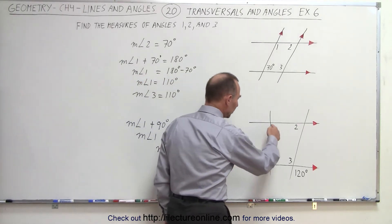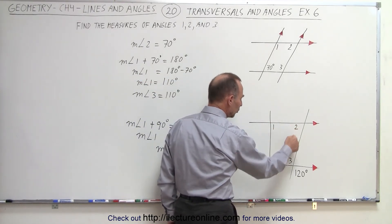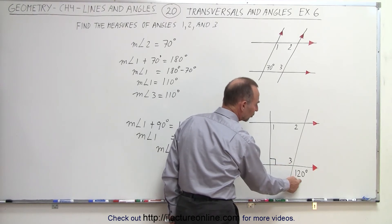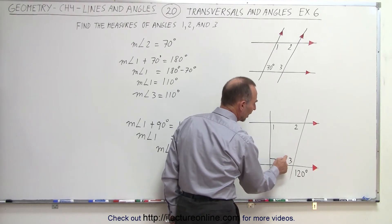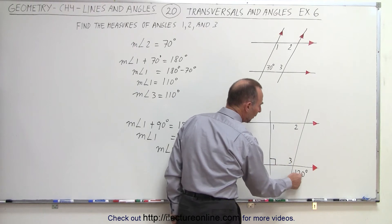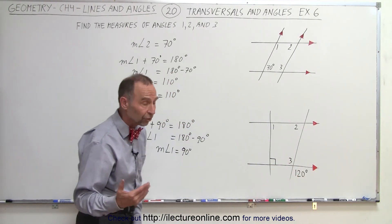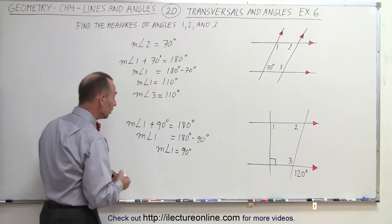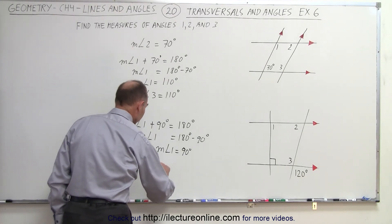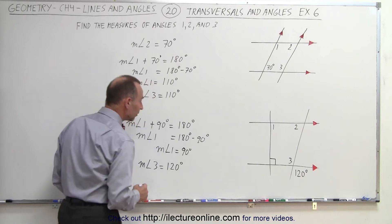We don't have a direct relation between angle 2 and angle 3 yet, but we are told that this angle is 120 degrees. Angle 3 is what we call opposite to the 120 degree angle, and opposite angles must be equal. Therefore, we can claim that the measure of angle 3 equals 120 degrees.